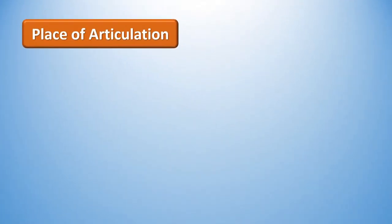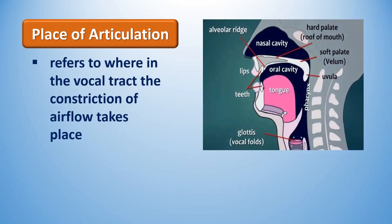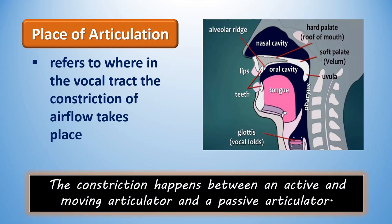Place of articulation refers to where, in the vocal tract, the constriction of airflow takes place. The constriction happens between an active and moving articulator, typically one part of the tongue, and a passive articulator, typically one part of the roof of the mouth.